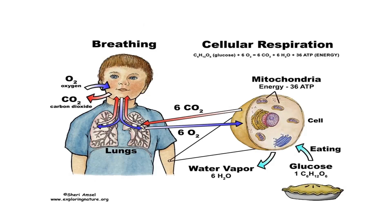Between breathing and cellular respiration: breathing happens in the lungs while respiration happens inside the cell in a part called the mitochondria. In breathing, oxygen is inhaled and carbon dioxide is exhaled. Cellular respiration can be divided into two types — aerobic and anaerobic — where aerobic is glucose plus oxygen giving you carbon dioxide plus water plus energy or ATP.